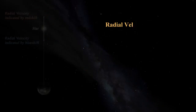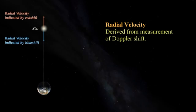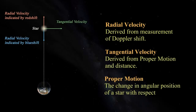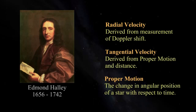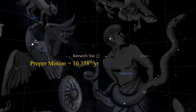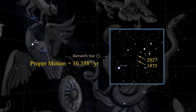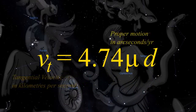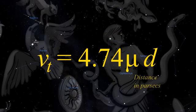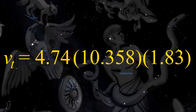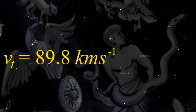Stars don't just move towards or away from us — there is also a component of motion perpendicular to our line of sight called tangential velocity, derived from the proper motion of a star and its distance. Proper motion is the angular change in position of a star, discovered by Edmund Halley in 1718. Barnard's star has a proper motion of 10.358 arc seconds per year and can easily be measured to move against background stars over a human lifetime. Using the formula where mu is proper motion in arc seconds per year and d is distance in parsecs, Barnard's star at 1.83 parsecs gives a tangential velocity of 89.8 kilometres per second.